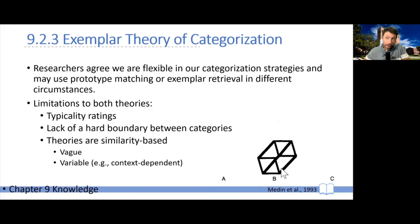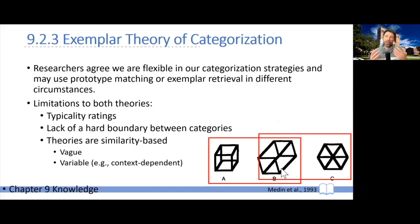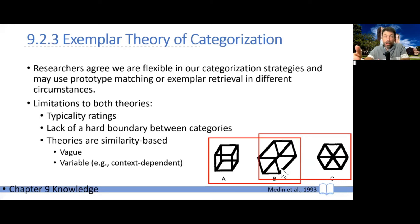It turns out that when you ask people whether the figure is two-dimensional or three-dimensional, their answer depends on the context. If you put it nearby one object, people say it's a three-dimensional object; nearby a different object, people say it's two-dimensional. So the representation of certain things depends entirely on context, and our judgments of similarity depend very much on context. Both the understanding of relevant features for similarity and context effects are not accommodated by the prototype or exemplar theories of categorization.